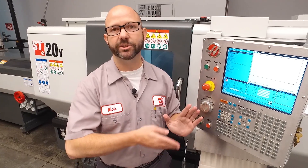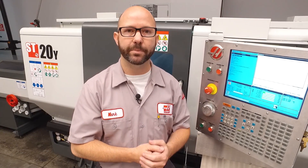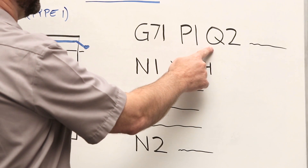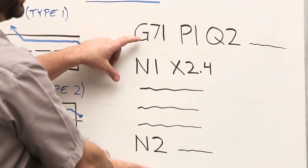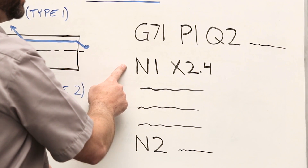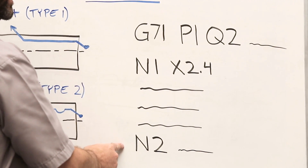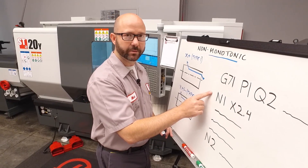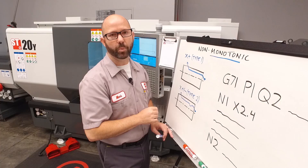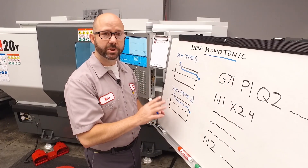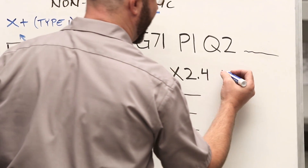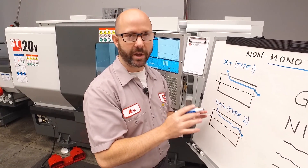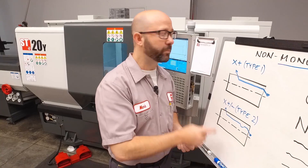We can now see that our X-axis is changing direction, which means we need to tell the control to use a Type 2 roughing cycle. Our G71 P and Q values define the contour subroutine that the roughing cycle uses. The P value refers to the starting block line and the Q value refers to the ending block. If we only use an X or a Z value on our starting block, the control defaults to a Type 1 cycle. To command a Type 2 cycle, we must command both an X and a Z value on our starting block — this is what lets the control know we're going to be changing directions.